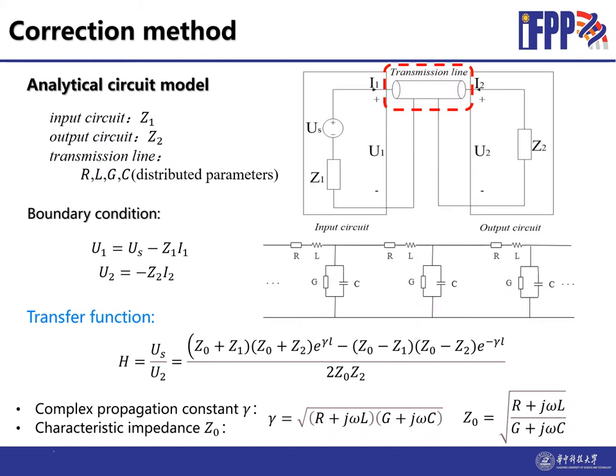First, we build an analytical circuit model for the whole measurement system. Here, the transmission line is treated as a two-port circuit. One port is connected to the magnetic probe. The magnetic probe is the input circuit to the transmission line. Here, Z1 is the impedance of the magnetic probe and Us is the induced voltage. I1 and U1 is the input current and voltage respectively. The other port of the transmission line is connected to the acquisition system. Z2 is the input impedance of the system and U2 is the voltage measured.